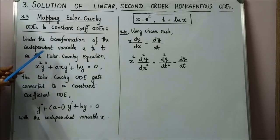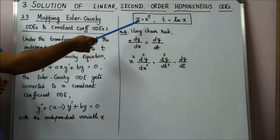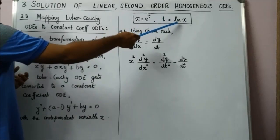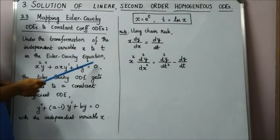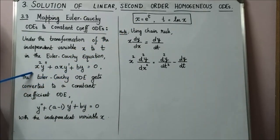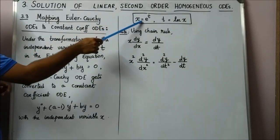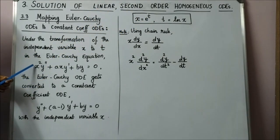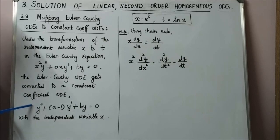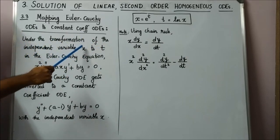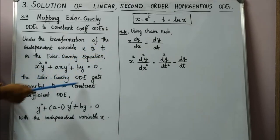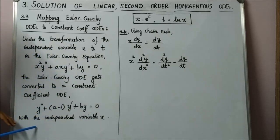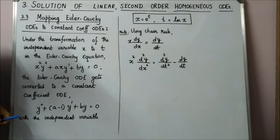What kind of transformation? The transformation is x = e^t, or equivalently t = ln x. If you define the relation between x and t this way — where x is the independent variable in your Cauchy-Euler equation — then replacing x with e^t maps the Cauchy-Euler equation to a constant coefficient equation with independent variable t.